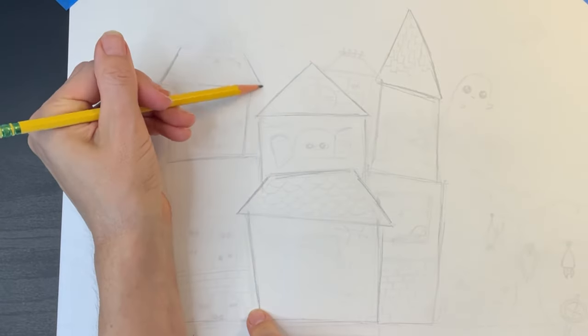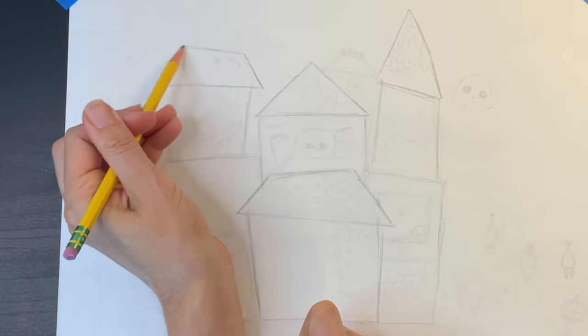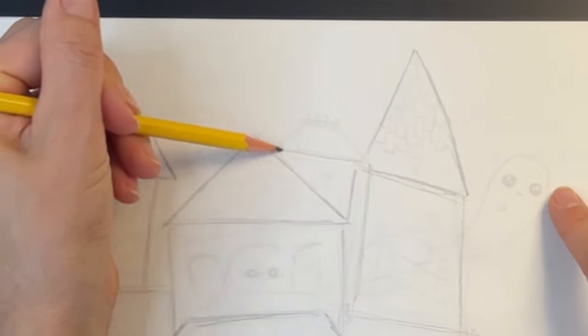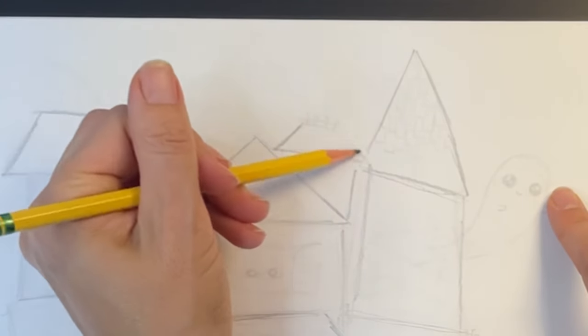Now I'm adding another trapezoid shaped roof on the left and I'm going to add an extra mini structure here with another trapezoid shaped roof.